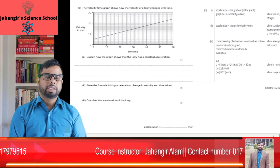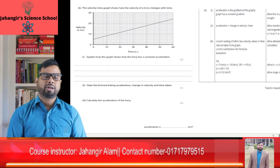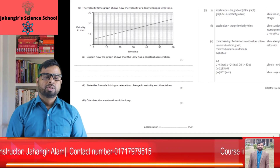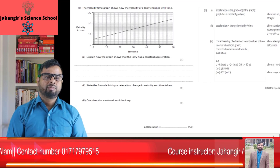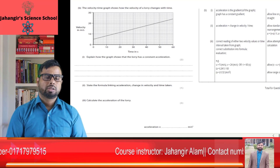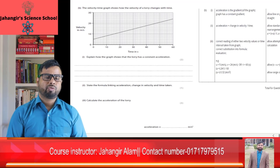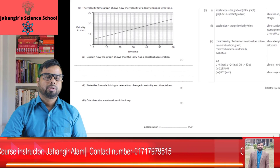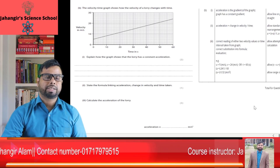Calculate the acceleration of the lorry. Acceleration equals the gradient or slope of the velocity-time graph. Here the final velocity is 24 m/s, initial velocity was 5 m/s, and time is 60 seconds. So: (24 − 5) / 60 = 0.32 metres per second squared. The unit of acceleration is metres per second squared.